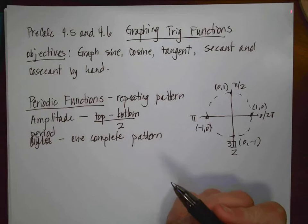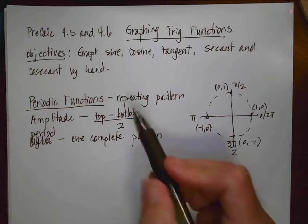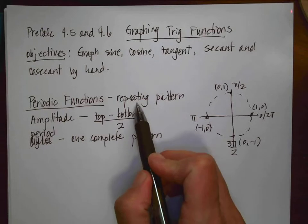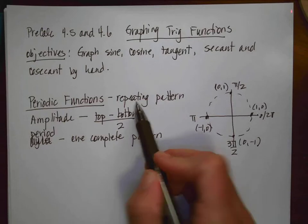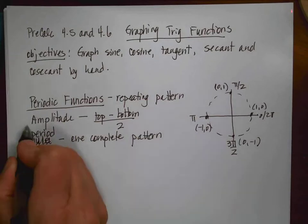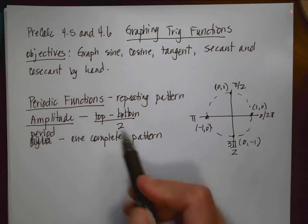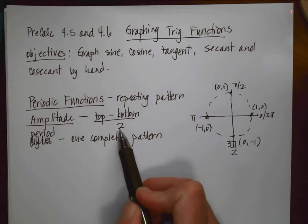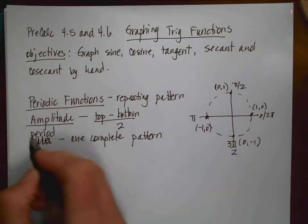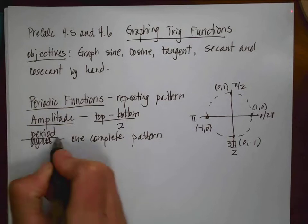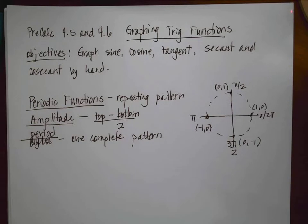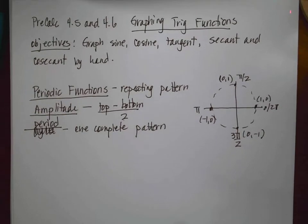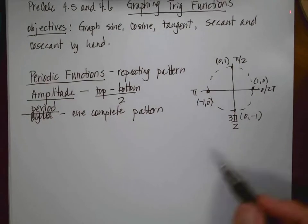A periodic function is a function that has a repeating pattern. Amplitude is going to be the top minus the bottom divided by 2, and period is going to be one complete pattern.